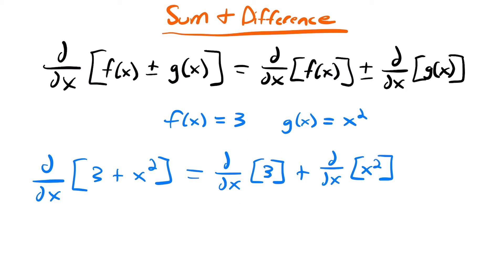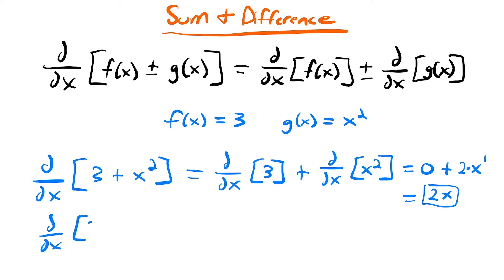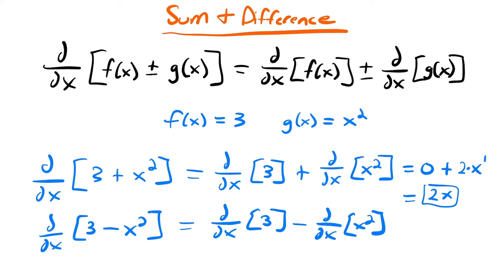The derivative of 3 is 0 because it's a constant, so we'd have 0 plus the derivative of x squared, which is 2x. So the result simplifies to 2x. For the difference, we'd have the derivative of 3 minus x squared, which equals the derivative of 3 minus the derivative of x squared. We already found those to be 0 and 2x, so subtracting gives 0 minus 2x, which equals negative 2x.